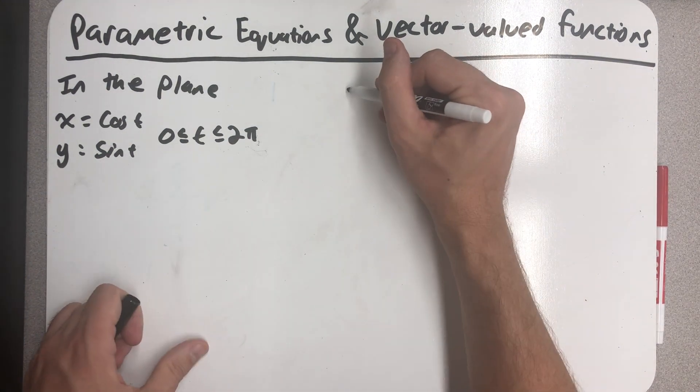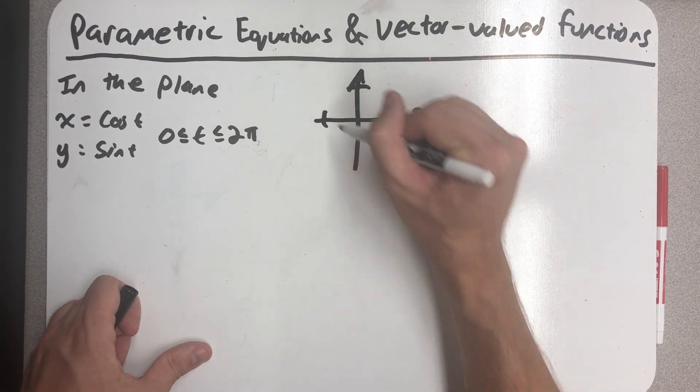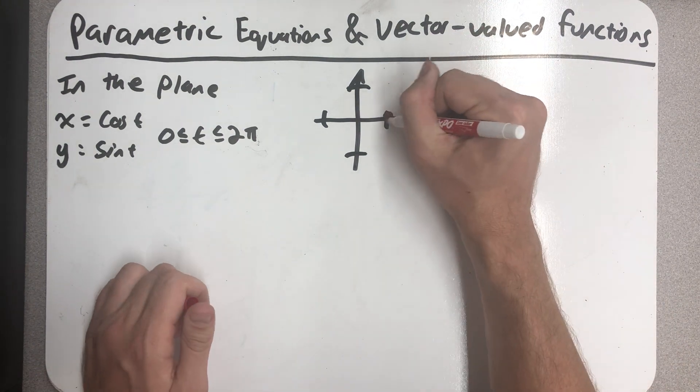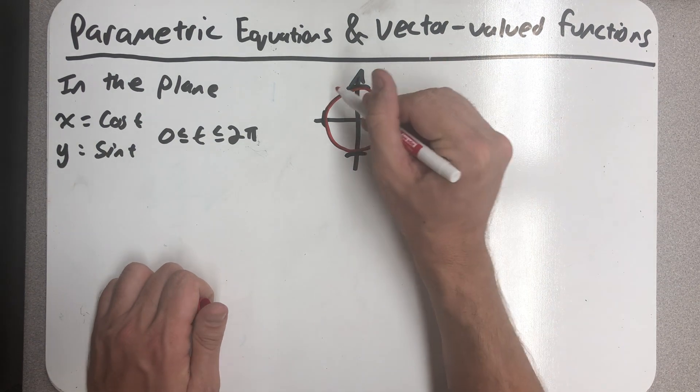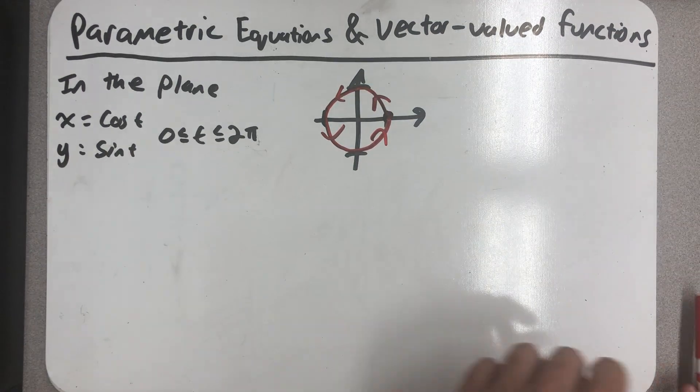Well, I hope we recognize this as a set of parametric equations that will generate the unit circle. In particular, the unit circle would be traced out counterclockwise on that interval of t.